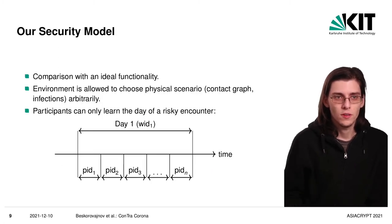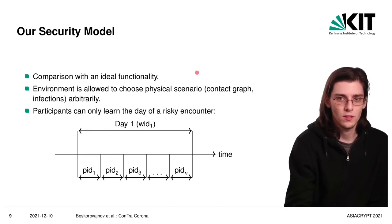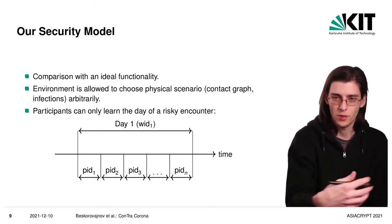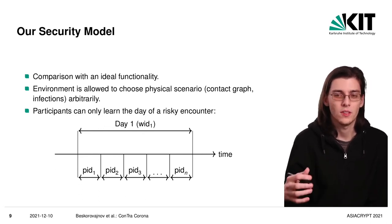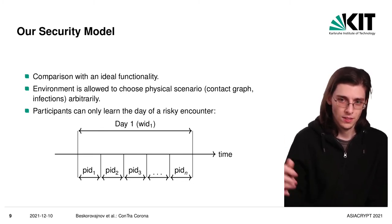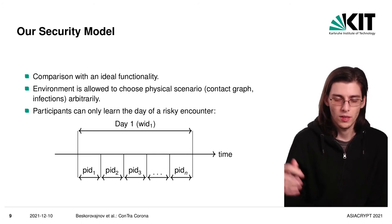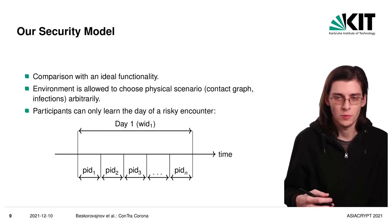Now a bit more on our security model. As it's common nowadays, we compare ourselves with an ideal functionality and then later on prove that there is no environment that can distinguish if it is executing with an adversary and the real protocol, or if it is in an experiment with a simulator that uses the adversary, and that has access to an ideal functionality, and the ideal functionality only reveals information that is necessary for the functionality we want to achieve.